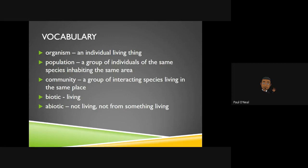We have community — that's a group of interacting species living in the same place. We have two words which we have seen on EOGs: biotic, which means living, and abiotic, which is not living, or non-living. So abiotic means not living, non-living; biotic means living.